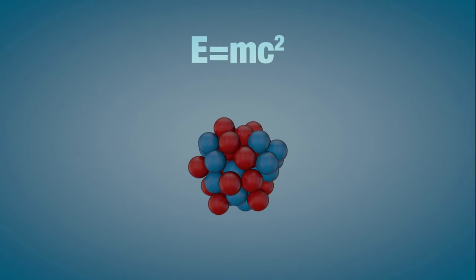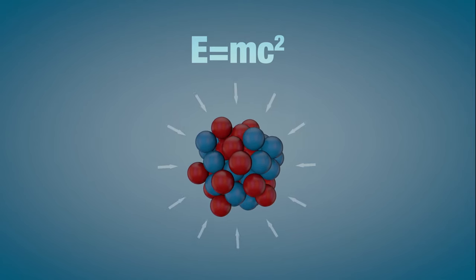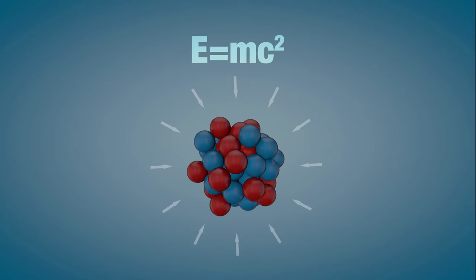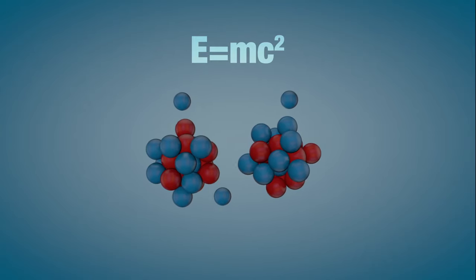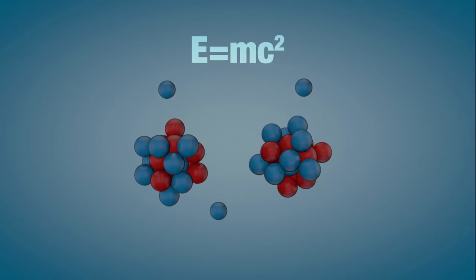Einstein's formula tells us that mass and energy are different forms of the same thing. In that original uranium atom, energy was holding everything together and it actually had a mass. Split the atom and that energy is released.